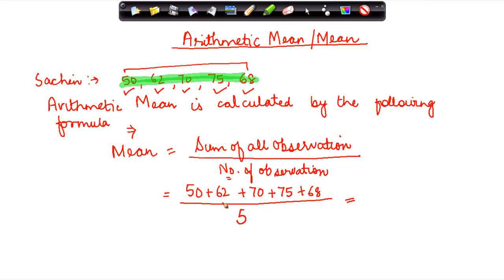Now I need to calculate all these numbers. Let me do it quickly: 8 plus 5 is 13, 13 plus 2 is 15... So I get 325 divided by 5.